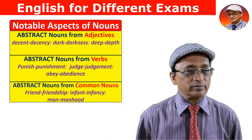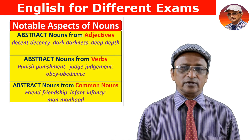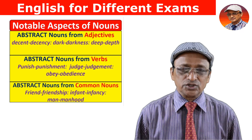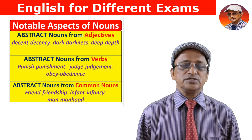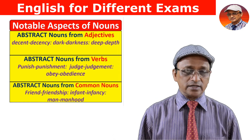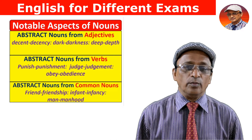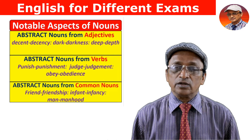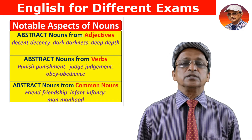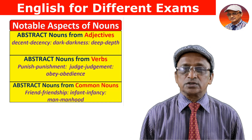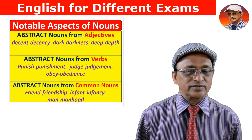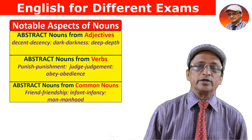Abstract nouns can also be created from verbs. For example, 'punish' is a verb and 'punishment' is the abstract noun. 'Judge' is a verb and 'judgment' is the abstract noun. 'Obey' is a verb and 'obedience' is the abstract noun. So out of these verbs, abstract nouns can be created.